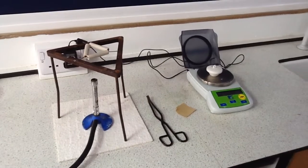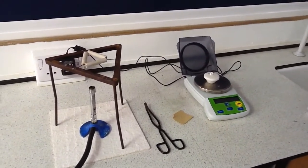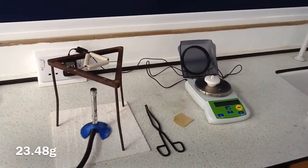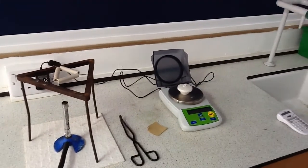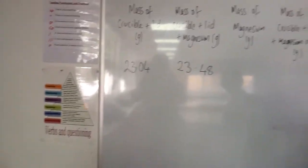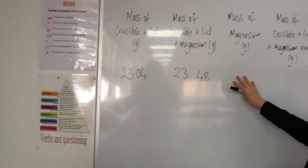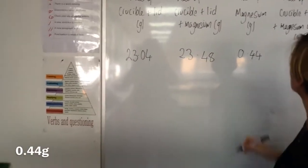The mass of the crucible and the lid and the magnesium is 23.48 grams. Those two pieces of information allow us to calculate the mass of magnesium, 0.44 grams.